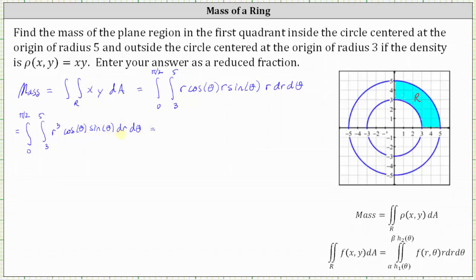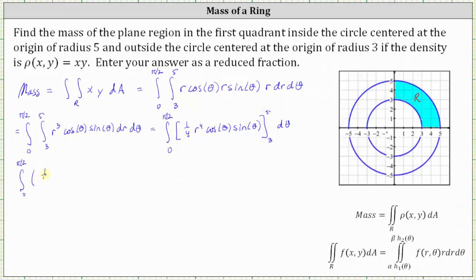I'll begin by integrating with respect to r, treating theta as a constant, which gives us r to the fourth divided by four times cosine theta times sine theta. Now we need to find F of five minus F of three by performing substitution for r. When r is equal to five, we get one fourth times five to the fourth power times cosine theta sine theta.